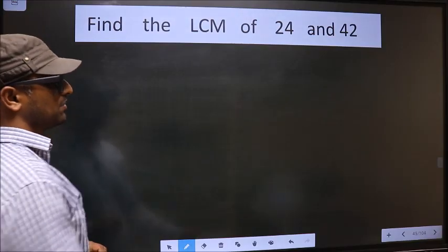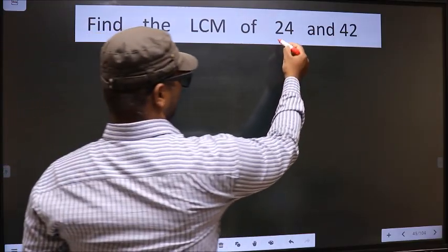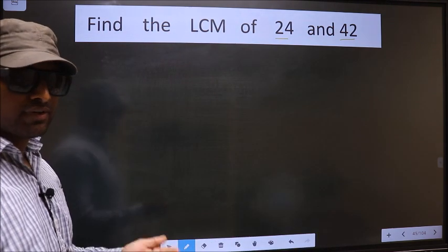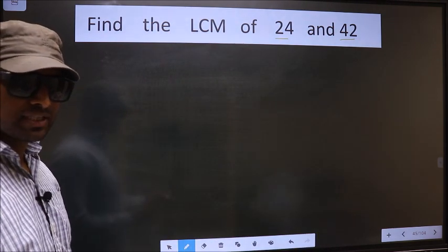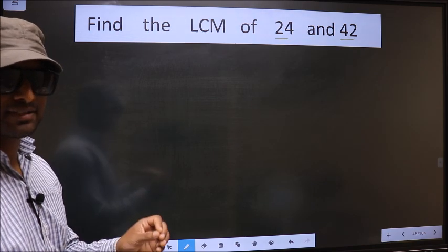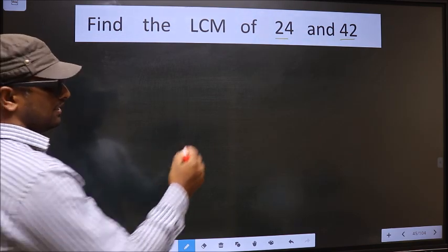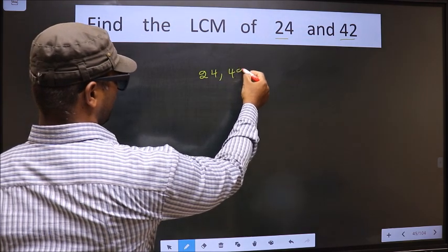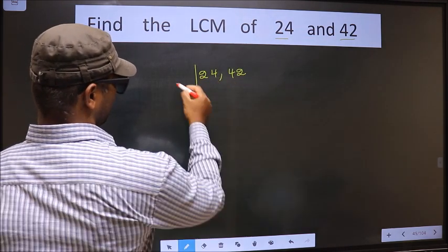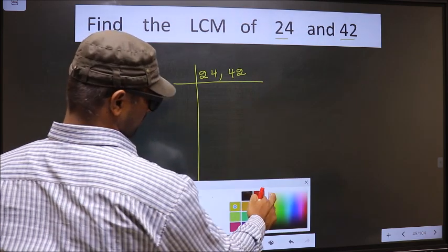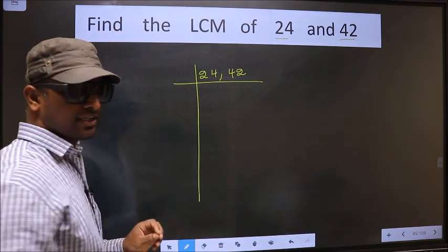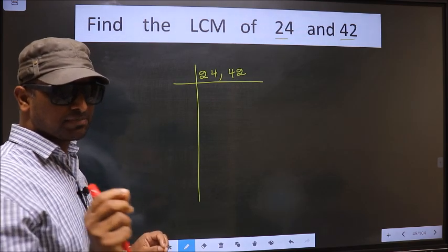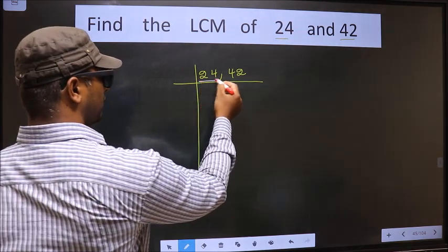Find the LCM of 24 and 42. To find the LCM, first we should frame it in this way — that is 24 and 42. Now we should focus on the first number, that is 24.